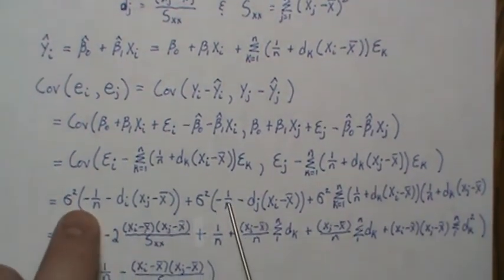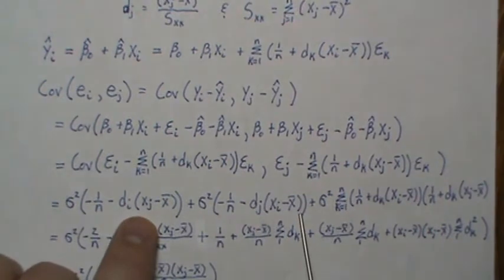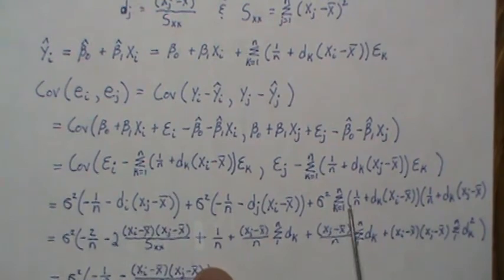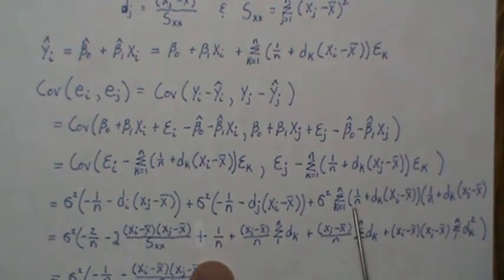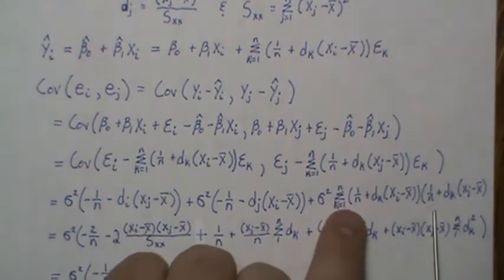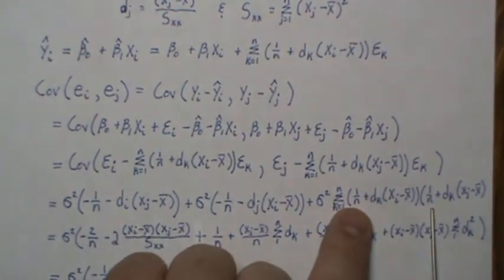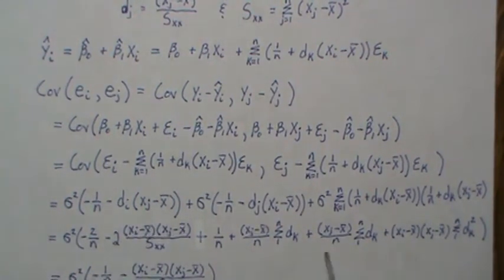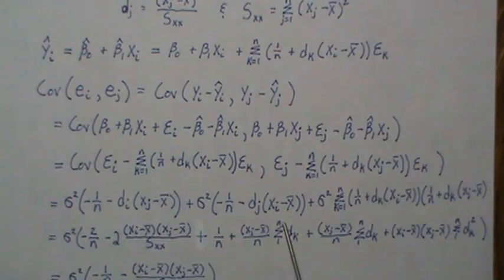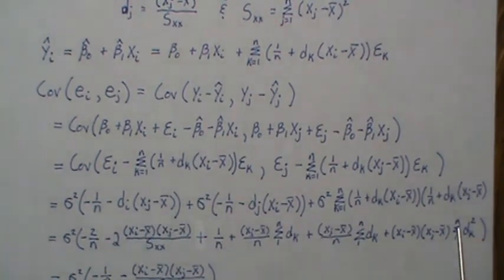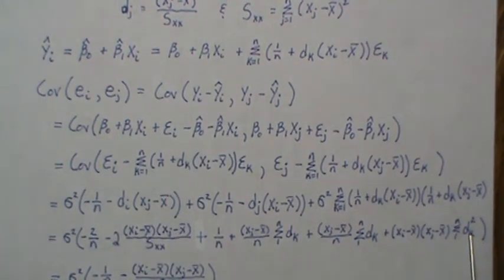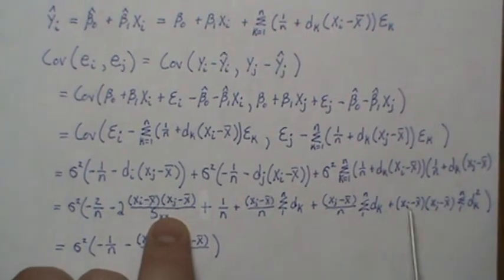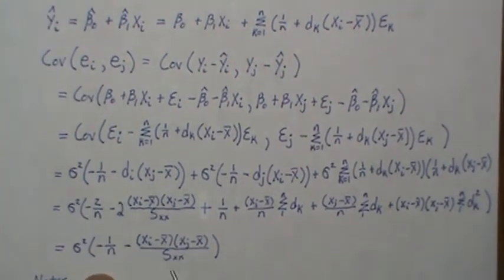These terms combine; plugging in d, the sum of 1/n gives 1/n², and combining terms we get our expression. The sum of dₖ is zero, one term is zero, one term is 1/Sxx. Those go away and terms combine to give the final covariance expression.